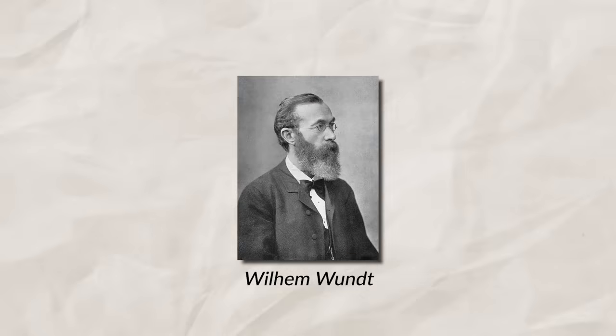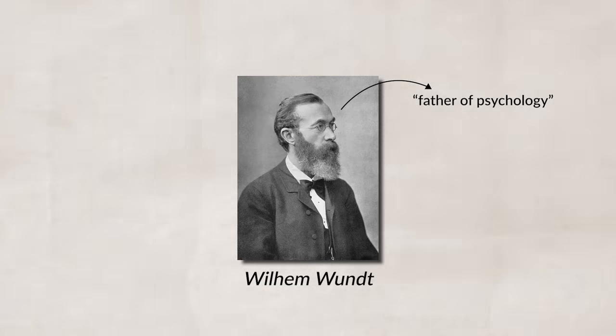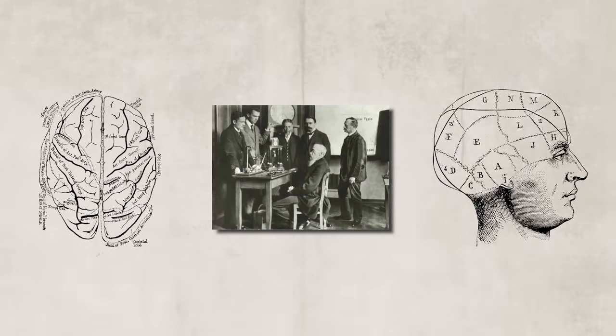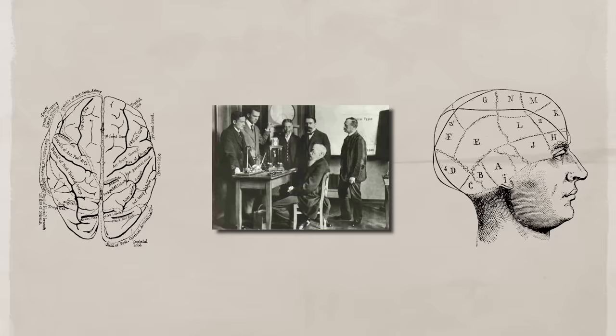However, this was not the true starting point for psychology, as psychology was still seen as part of philosophy. We can trace the study of psychology all the way back to the late 19th century with William Wundt, who is known as the father of psychology. Wundt created the first laboratory dedicated to psychology, officially setting psychology apart from philosophy and making it its own science.